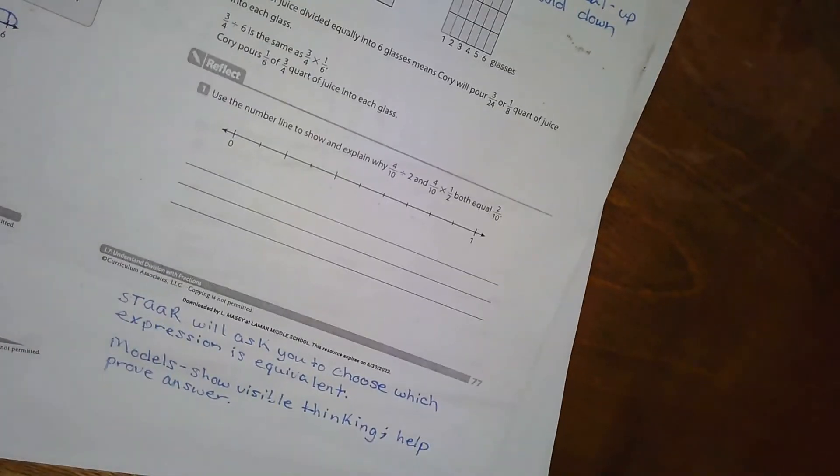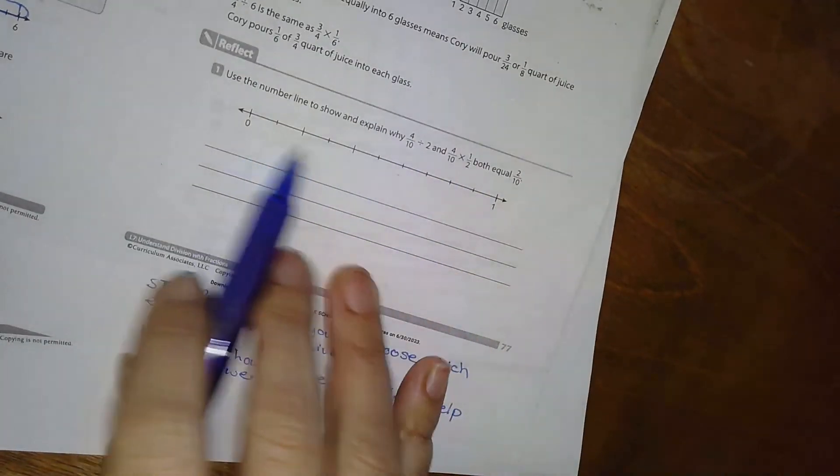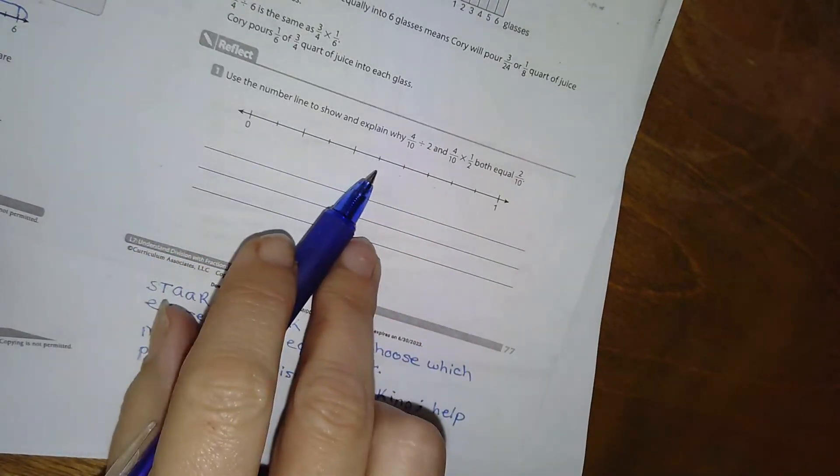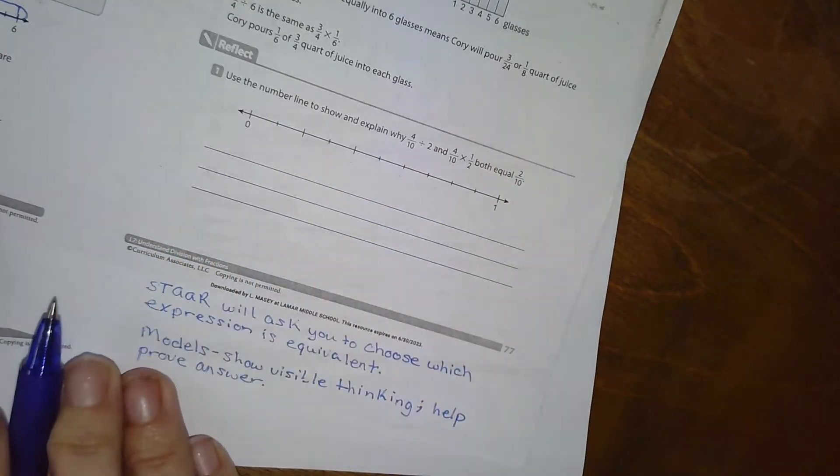Okay, so I have four-tenths, or I have tenths really, one-tenth, two, three, four, five, six, seven, eight, nine, ten, okay?